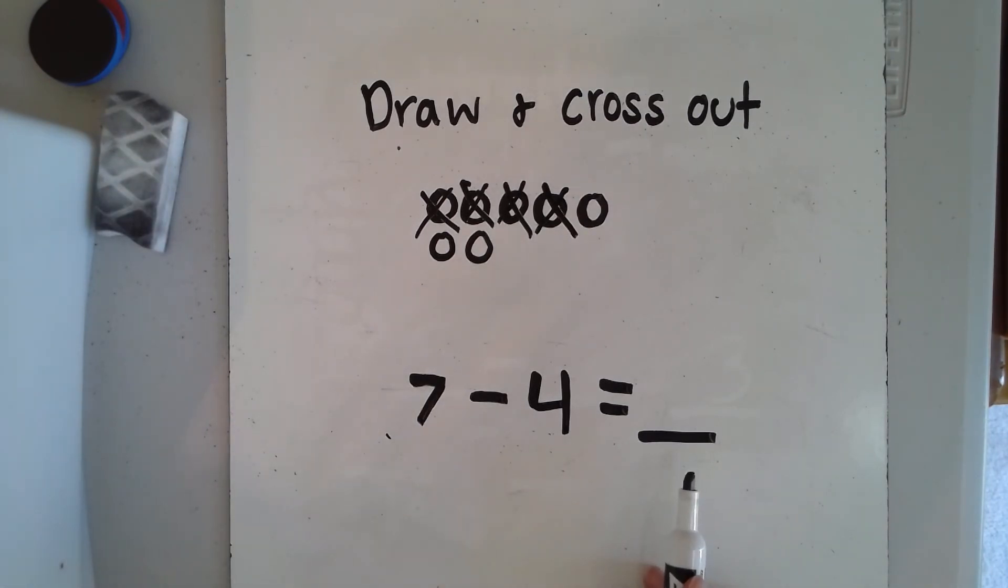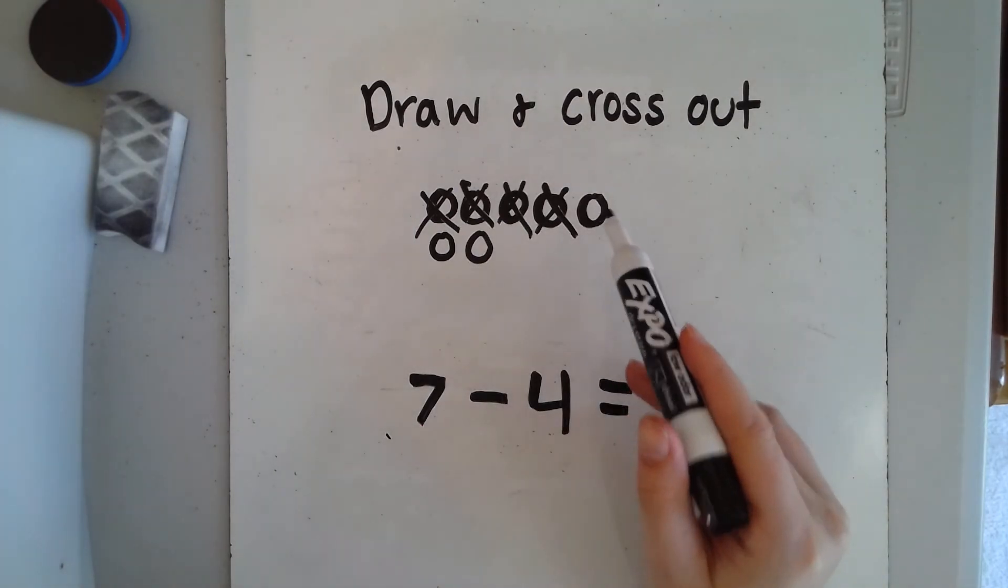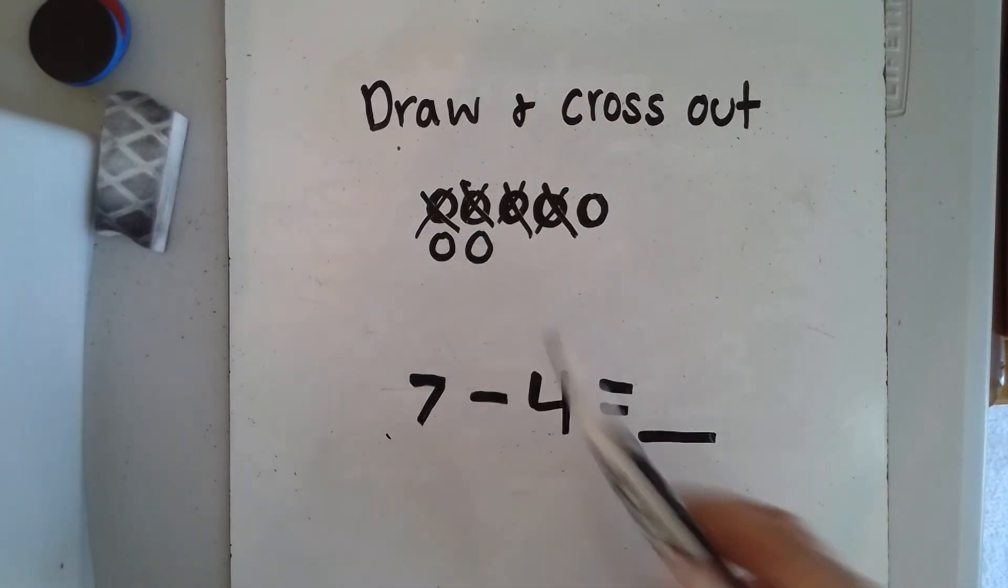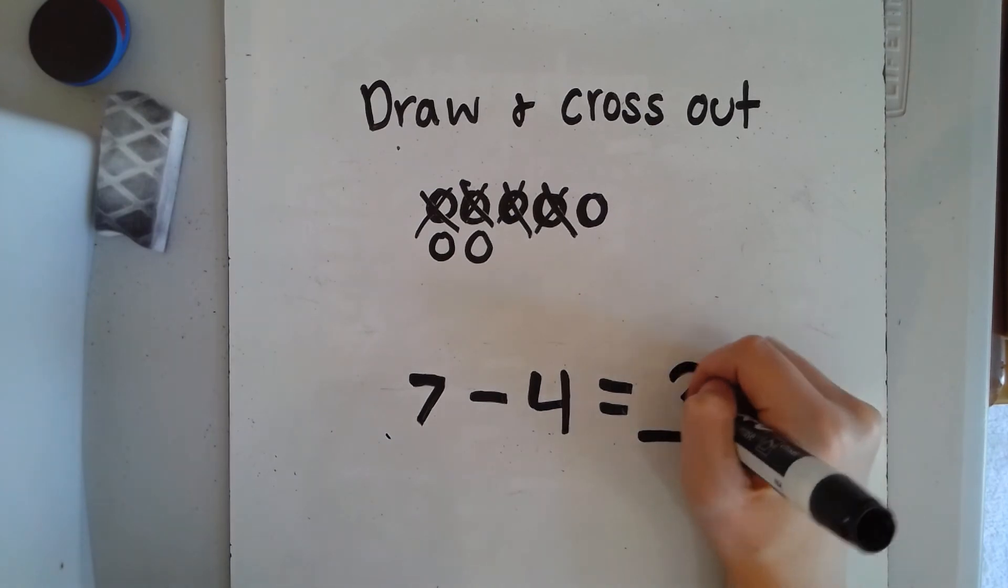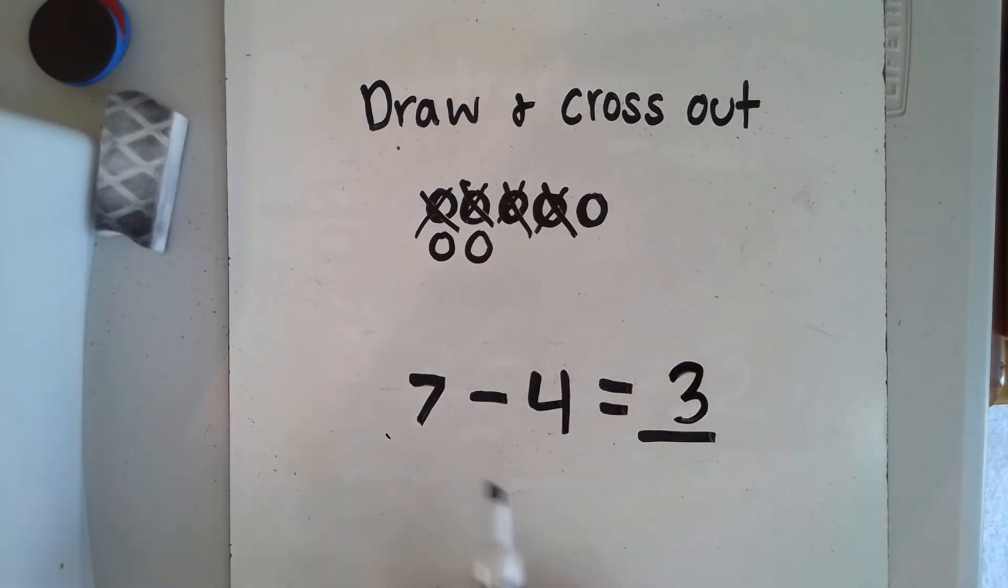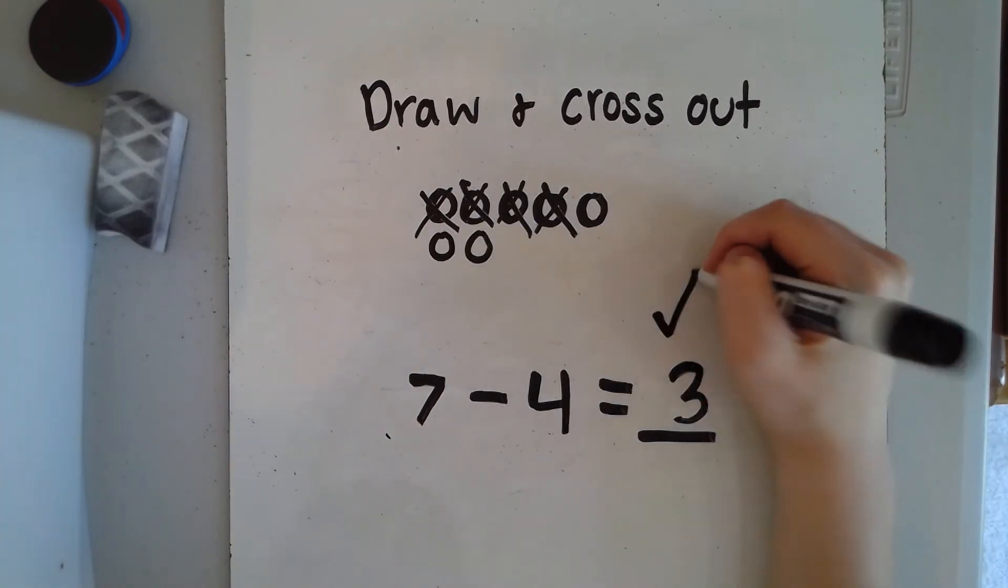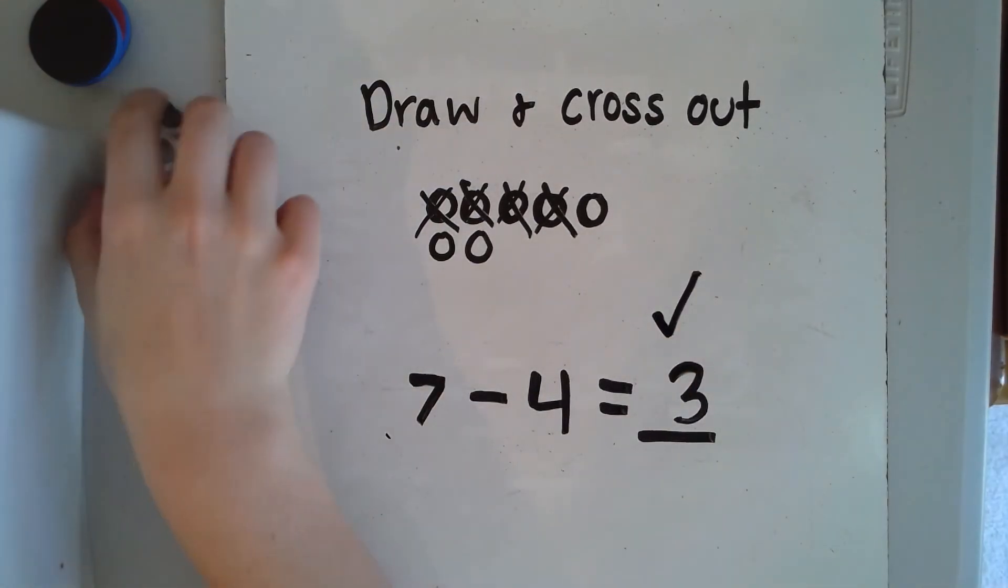Now to find my answer, I need to count and see how many circles are left over or not crossed out. Let's count and find out: one, two, three. Three circles left over. Seven minus four equals three. Good job! That's how we use the cross out strategy.